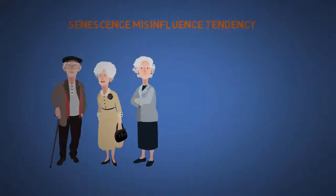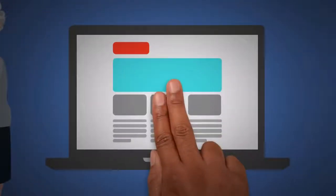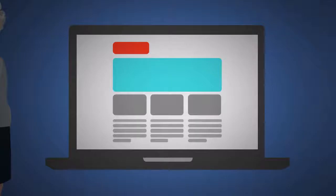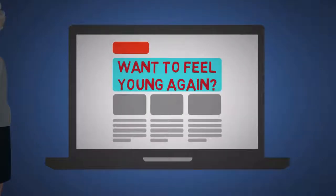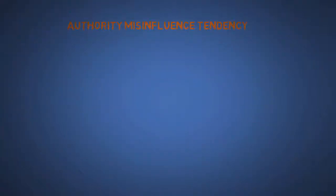The twenty-first is senescence misinfluence tendency. As we age, there is a natural loss of certain skills and abilities. So if you got a website targeted for older people, make sure the fonts are big. Try to speak slower and enunciate your words more.